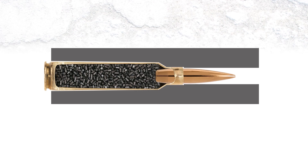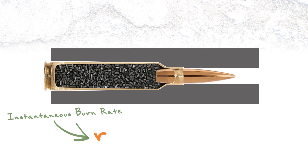The most important concept you need to understand is the burn rate equation I'm about to show you. Burn rate is shown as the variable R — the instantaneous burn rate at any given point in time during the process. It's not going to stay consistent; it's going to be changing. That burn rate equals the variable B times P raised to the A power.